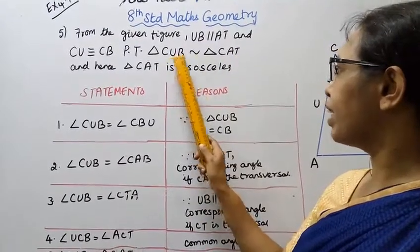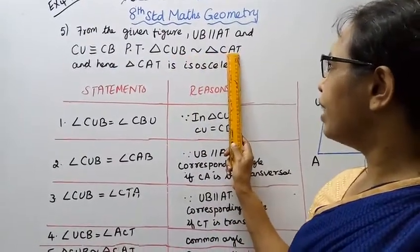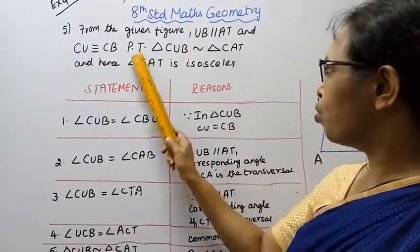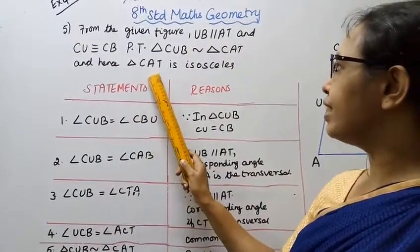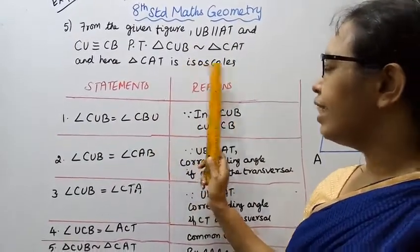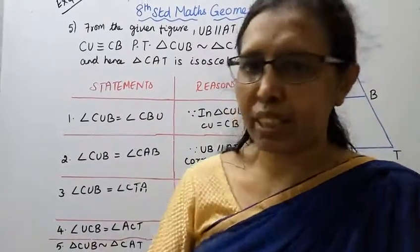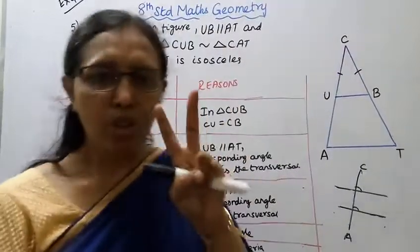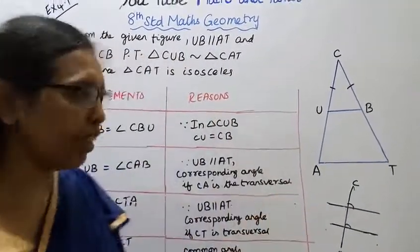Triangle CUB is similar to triangle CAT — we have to prove this. And hence triangle CAT is isosceles. Isosceles means two sides are equal.